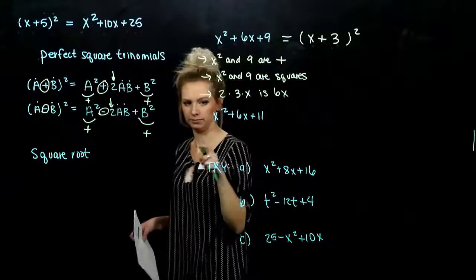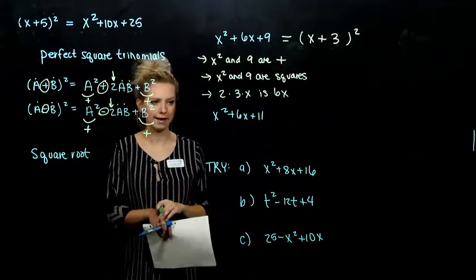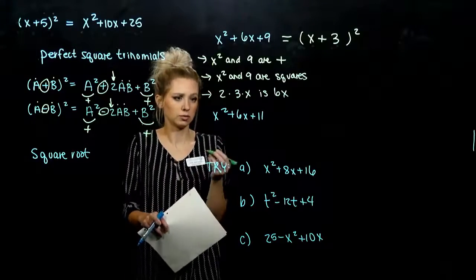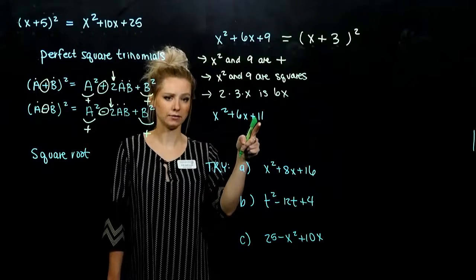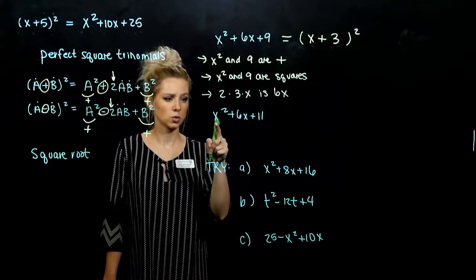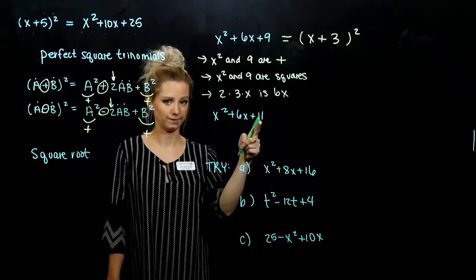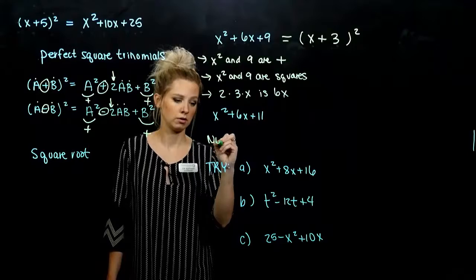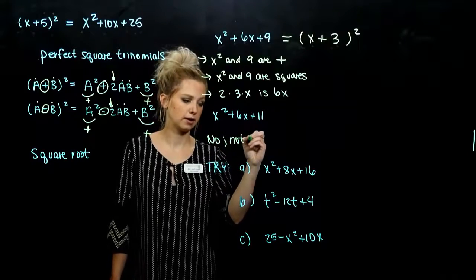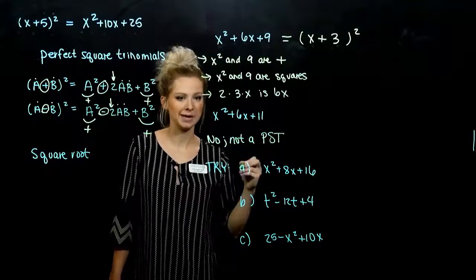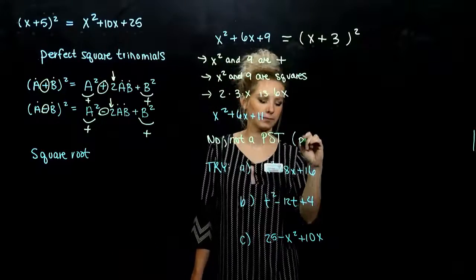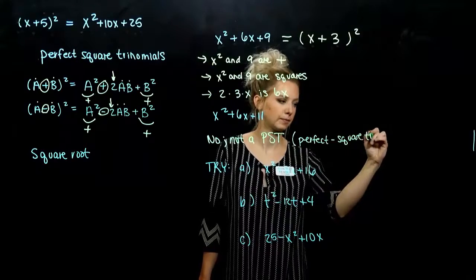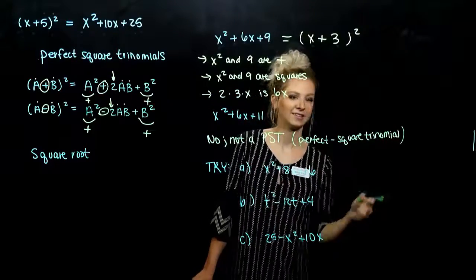Let's look at the next one. Is that a perfect square trinomial? No. Just running through the checks: positive, positive — that's satisfying. But the last term is not a perfect square. I can't take some number and square it and get 11. So this one is not a perfect square trinomial, or PST.